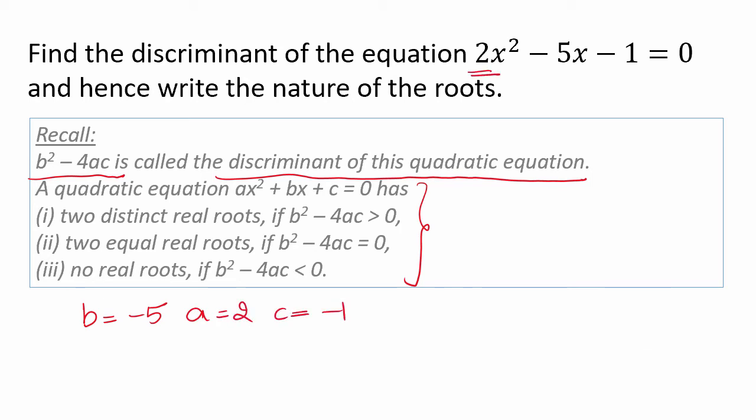So, b² - 4ac will be (-5)² minus 4 times 2 times (-1), which is 25 minus 4(2)(-1).